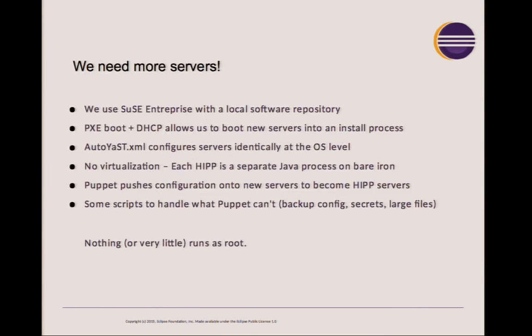One thing we realized after deploying Hudson-per-project is that we needed a lot more servers. Java processes tend to consume a significant amount of memory, so memory was a very hot commodity. As system administrators — and we tend to be fairly lazy, which I think is a good thing — we did not want to spend time manually installing servers. So we started investigating technologies such as Puppet and enterprise Linux features offered by SUSE to automate the process. We buy a new box, plug it in, and it boots and configures itself. About an hour later, we have a Hudson server ready to accept anywhere from 12 to 50 Hudson instances.